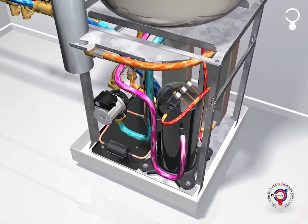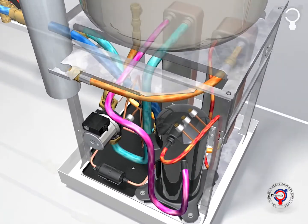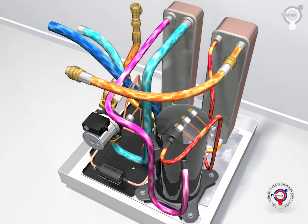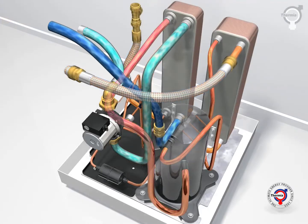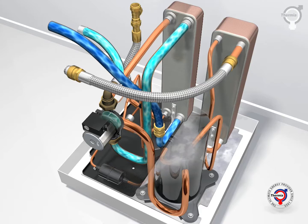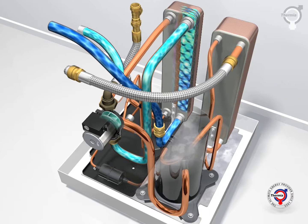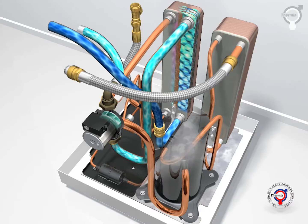The brine fluid from outside the building circulates through the evaporator. In the evaporator, the brine heats up a cold liquid refrigerant that then starts to boil and turns into gas form.